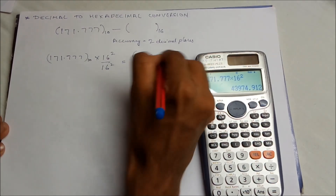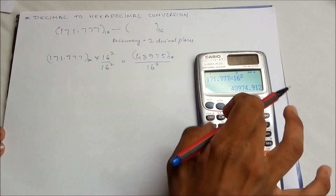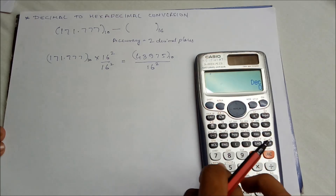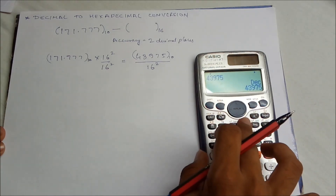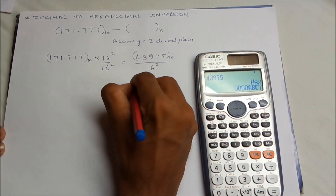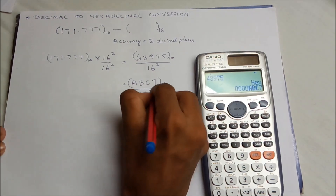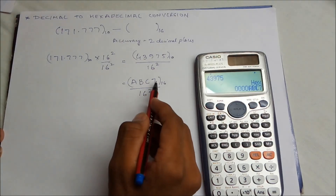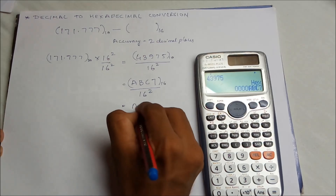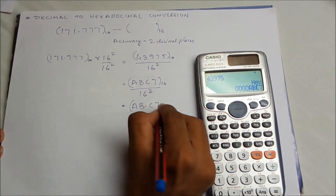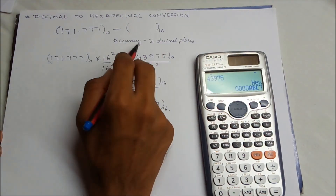First write the number and multiply and divide by 16 squared, that is 16 to the power of the desired accuracy. Calculate the numerator, then convert the decimal number to hexadecimal using mode base-n. Enter the decimal number and convert it to hexadecimal. So that gives A, B, C, 7 in hexadecimal, divided by 16 squared. This is the same as shifting the decimal point towards the left by two places, giving AB.C7. So AB.C7 is the hexadecimal equivalent of 171.777, accurate to two decimal places.